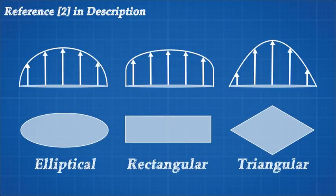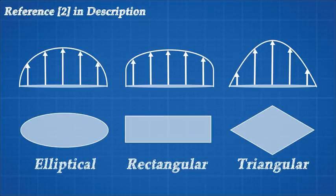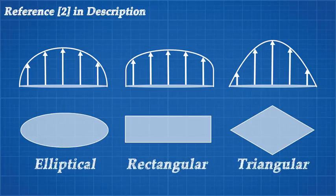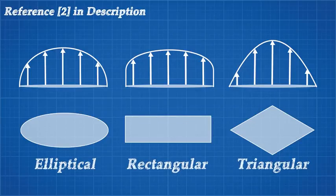The rectangular wing's lift distribution is quite high at the edges, and this leads to high levels of induced drag. But this is the easiest shape of wing to manufacture and is mostly used in smaller, cheaper aircraft. A triangular wing has high lift in the centre which rapidly drops off towards the edge. This type of wing has low induced drag, but its lift distribution is far from ideal. So the ultimate goal is to tailor the lift across the wing into the shape of an ellipse, to maximise lift and minimise induced drag.